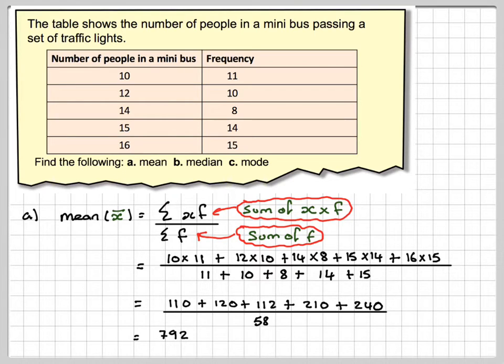And that gives me 13.6551 on my calculator for the mean, which to one decimal place will be 13.6.